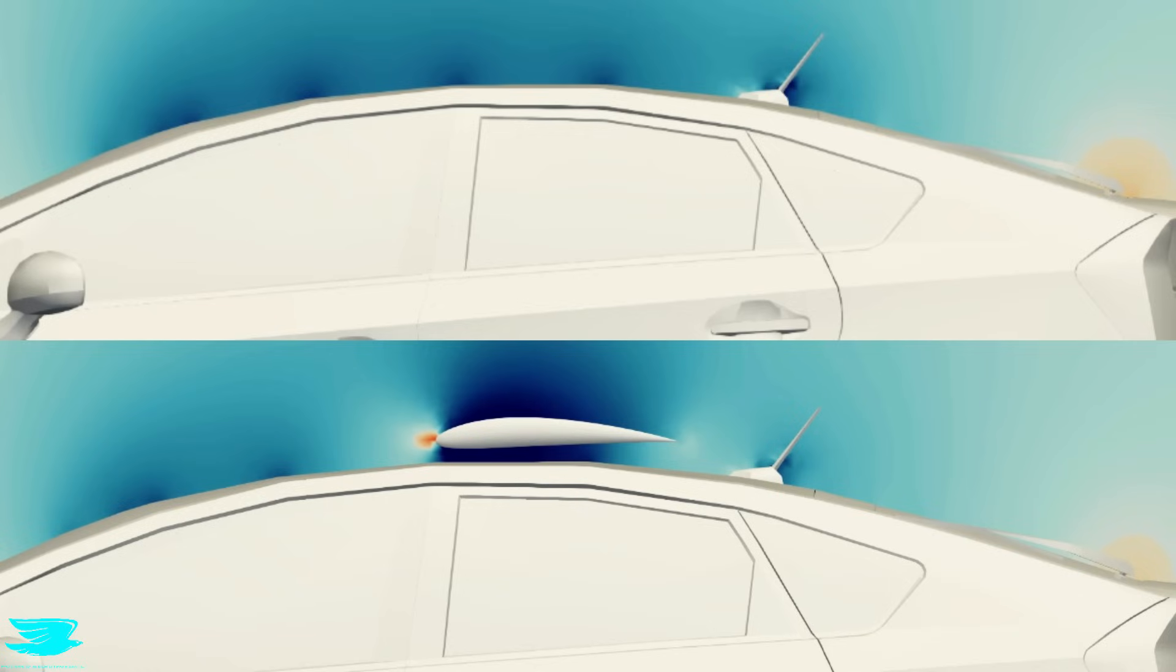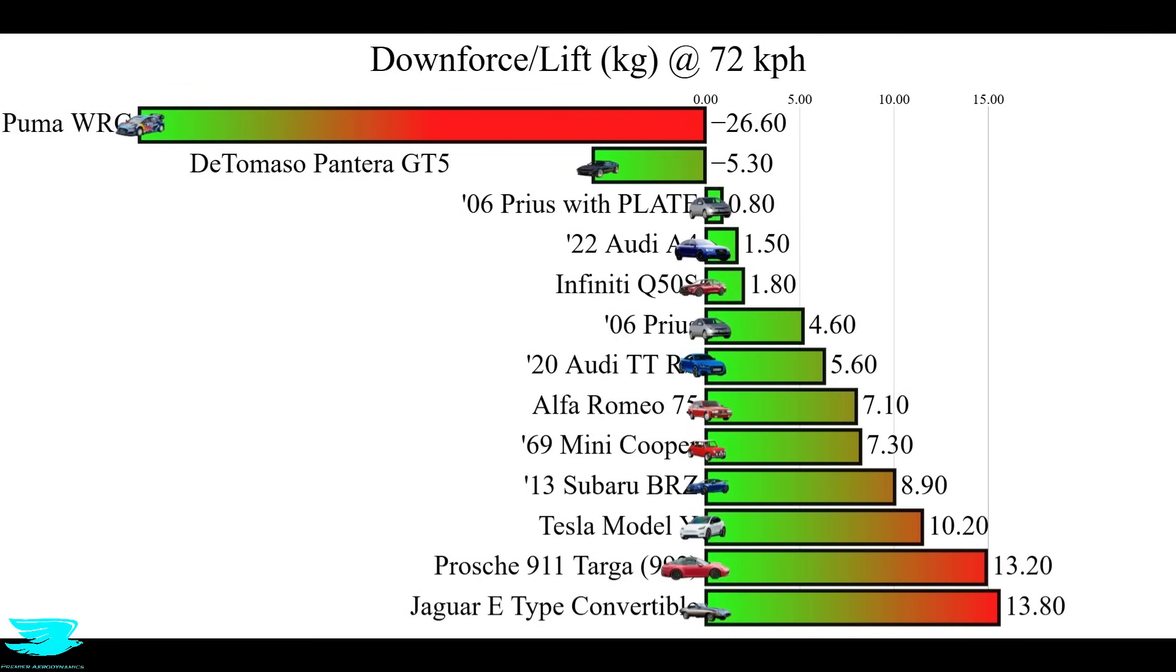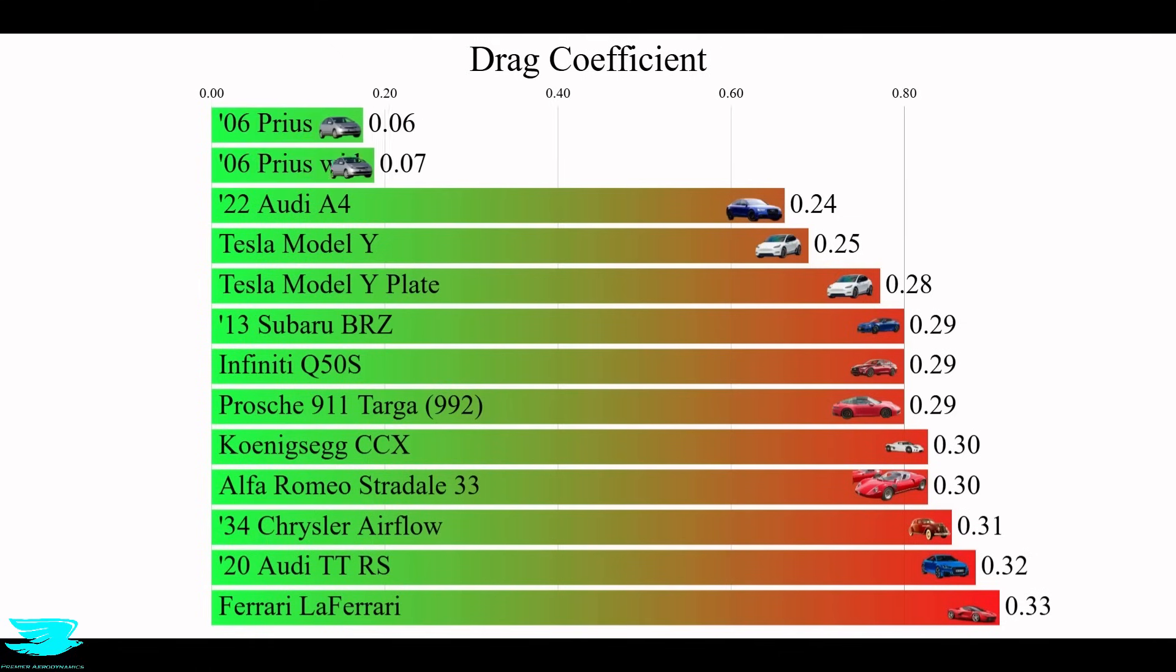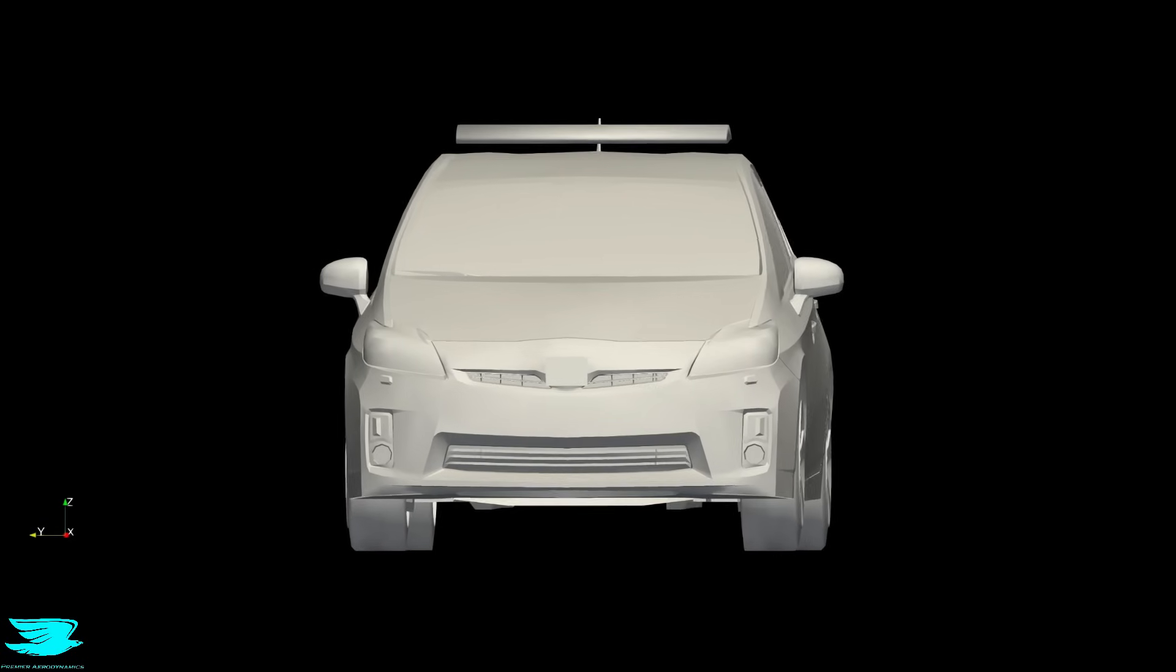Well, for the original Prius, 4.6 kilos of lift were produced. With the plate, the lift is only 1.8 kilos. And the drag option went from 0.27 to 0.29 with the plate. So that lift reduction was better than the plate on the Tesla, and the drag penalty was less. So maybe using a wing is better.